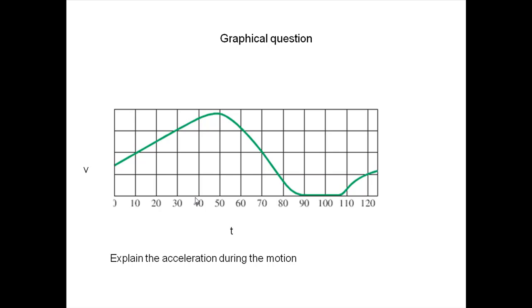In these type of questions, we need to remember two things. When the velocity-time graph shows upward slope, the body is accelerating. When it shows downward slope, the body is retarding. When it is a straight line with time, velocity is constant and there is no acceleration.